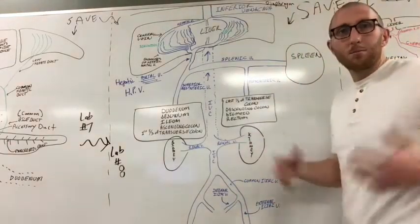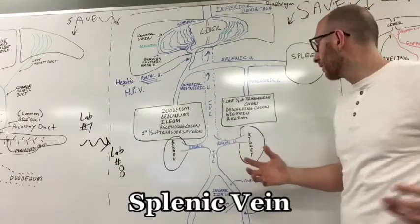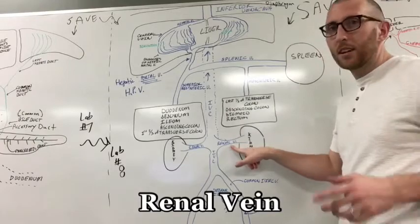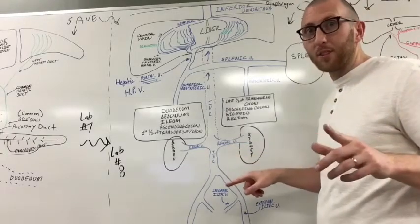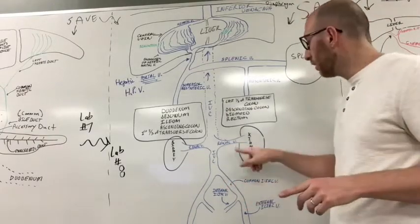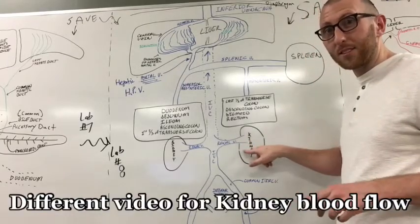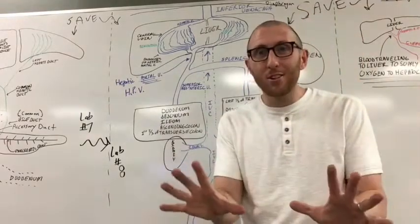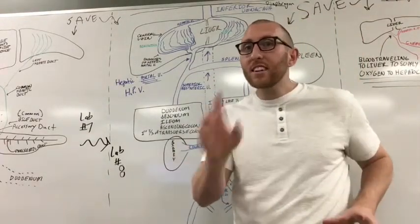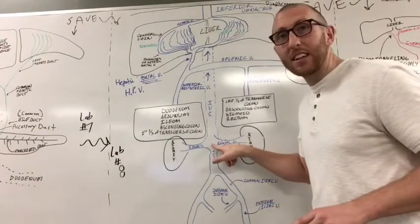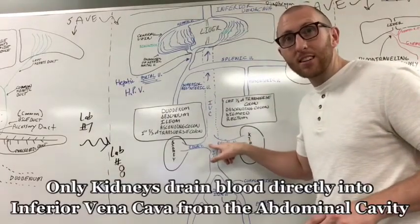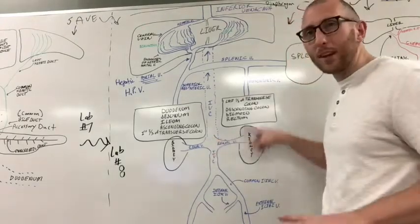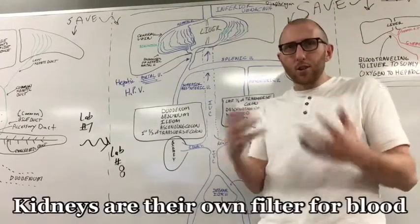The splenic vein, opposite of the splenic artery, renal vein coming off the kidneys. I got another video talking about kidney blood flow. Check out that video if you want to know more about what's going on in the kidneys specifically. But here is where it gets crazy. Hang with me, because only the kidneys take blood directly into the inferior vena cava. Only the kidneys.